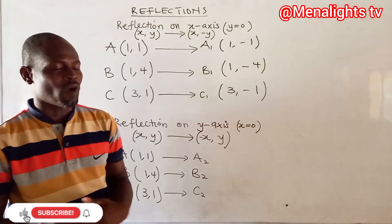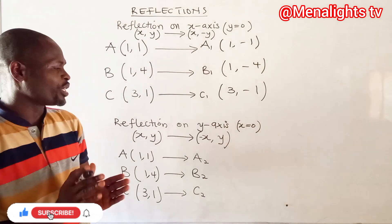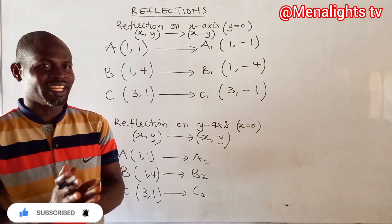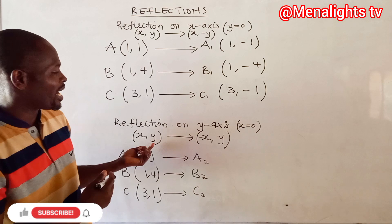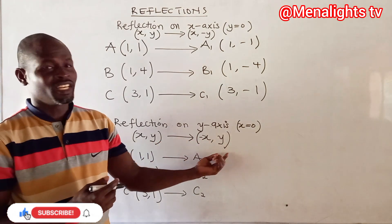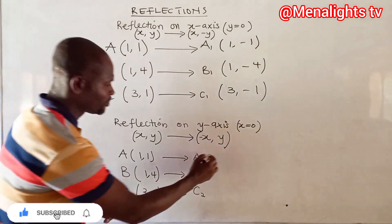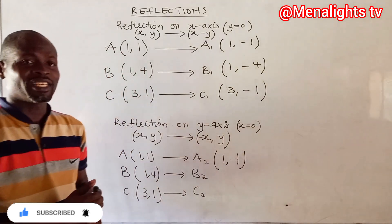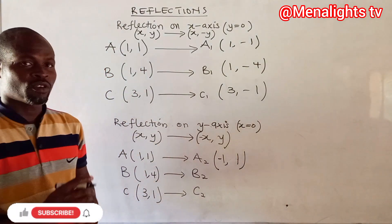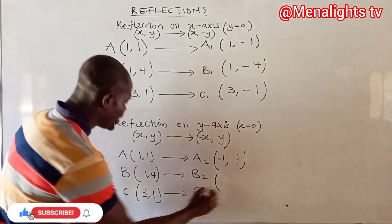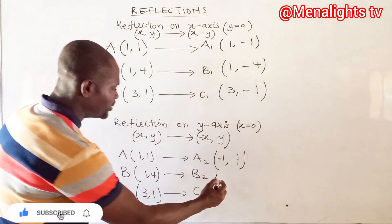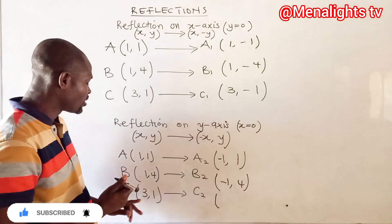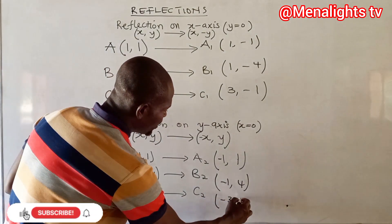To reflect on the y-axis, x is zero, which means all x-coordinates become negative: (x, y) maps to (-x, y). So the first point, A at (1, 1), becomes (-1, 1). Point B at (1, 4) becomes (-1, 4). And point C at (3, 1) becomes (-3, 1).